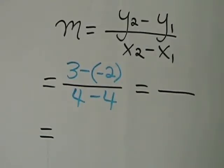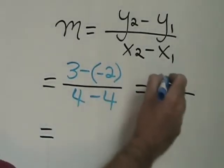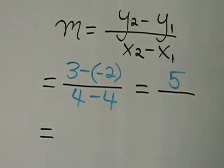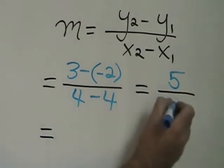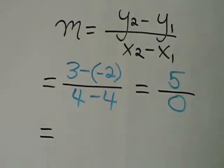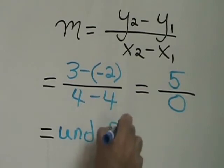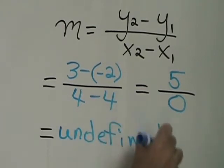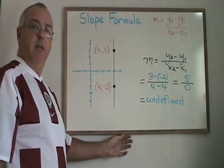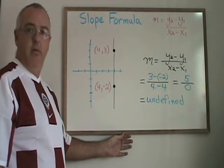When I simplify this, I get 3 minus negative 2 in the numerator, which is 5, and 4 minus 4 in the denominator, which is 0. I am dividing by 0, which is undefined. And this makes sense because the slope of a vertical line is always undefined.